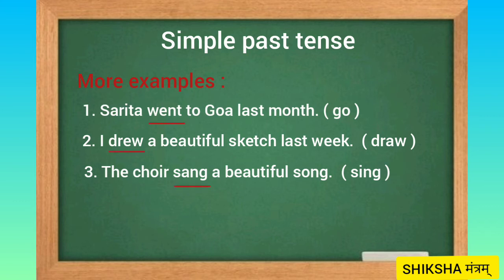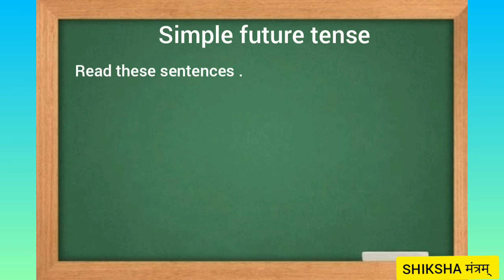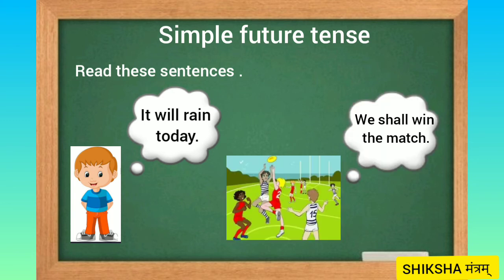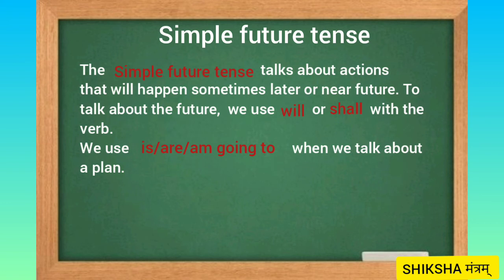Simple future tense. Read these sentences: It will rain today. We shall win the match. In these sentences 'will rain' and 'shall win' state that the activities have not happened yet and will happen later, so these are in the simple future tense. The simple future tense talks about actions that will happen sometime later or in the near future.